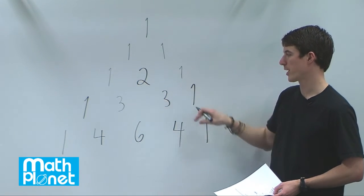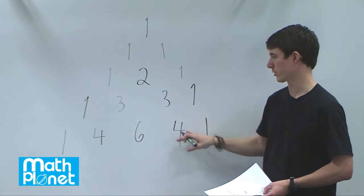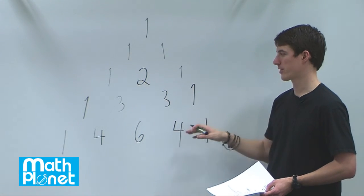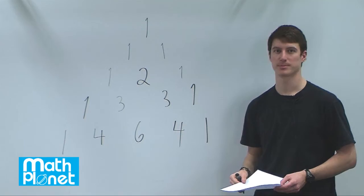And it continues in this way, increasing in steps by one more term per step. You always have ones on the outside, and then you add the two above it to get the term below it.